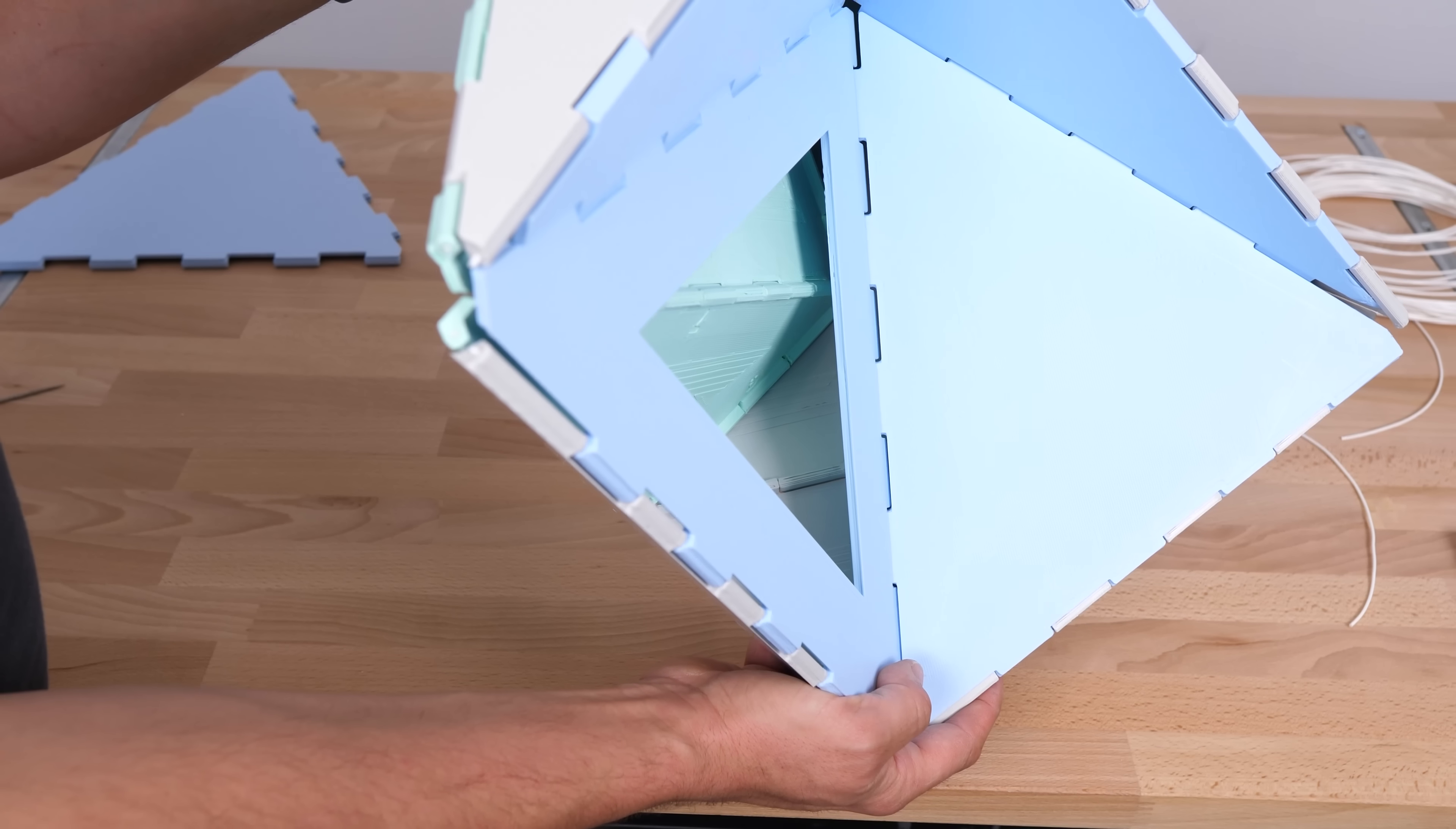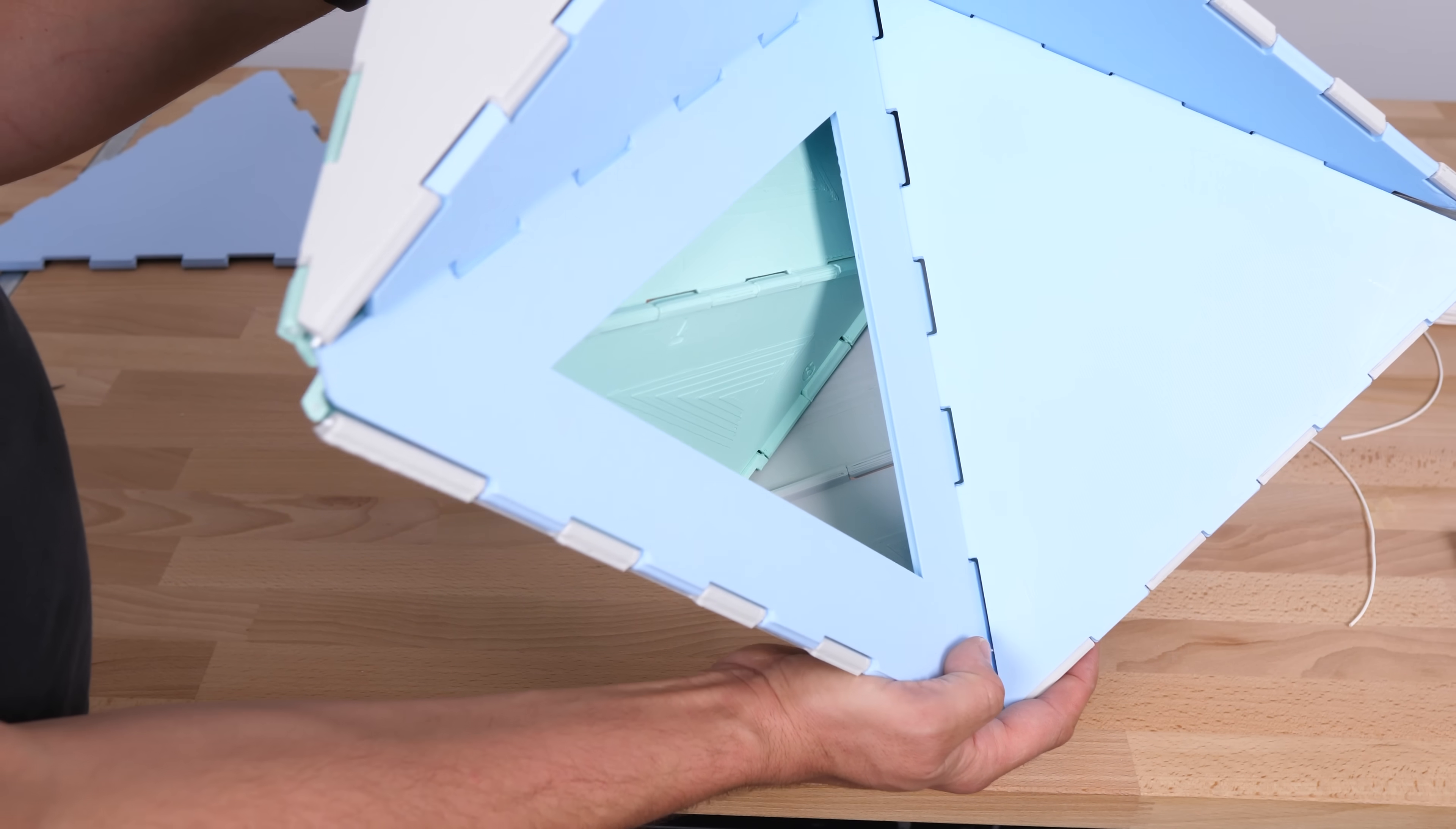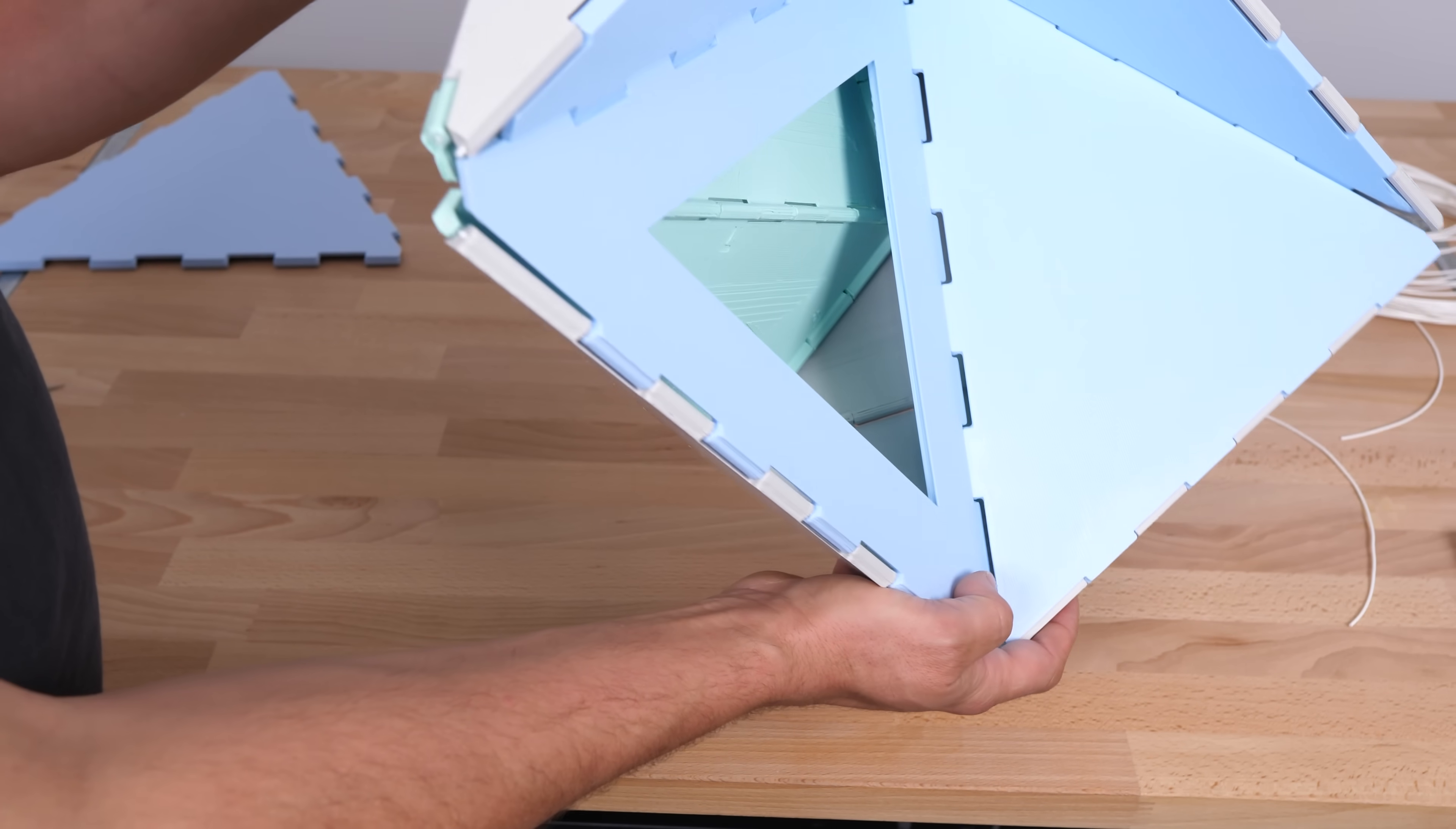you can see what's going on inside. It can flex until these two faces touch. And you have the same limit in the other direction, with the mirror image of those faces on the other side. So that's the full range of movement.